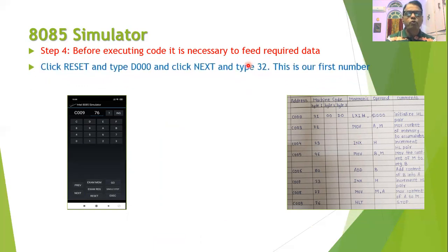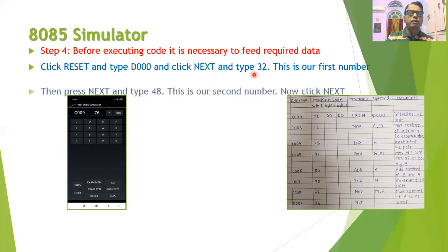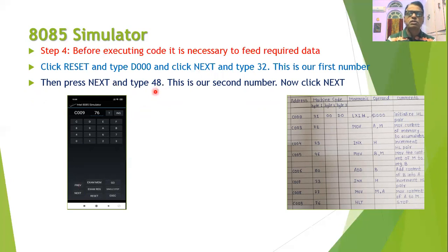To feed the data, press the Reset button. After reset, type the address D000 and press Next, then type the first number. Suppose the first number is 32 hexadecimal. Then press Next again and type the second number, which is 48 hexadecimal. Both numbers are hexadecimal numbers. Then click Next again.